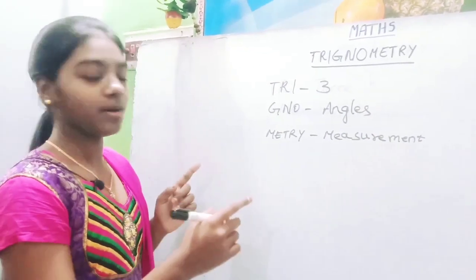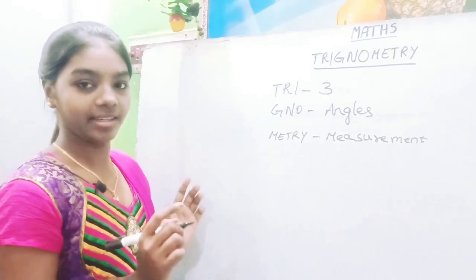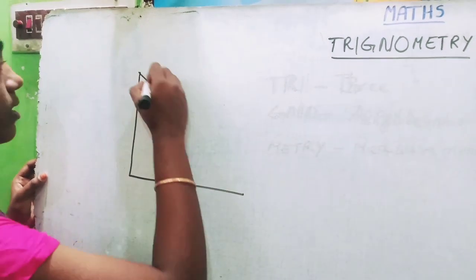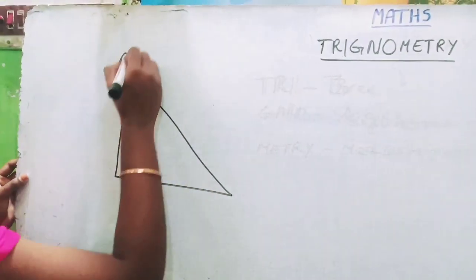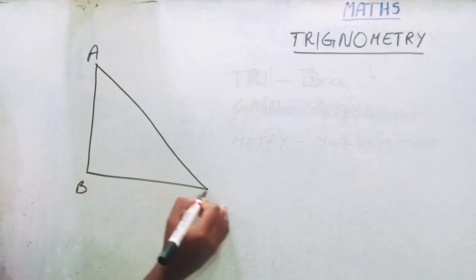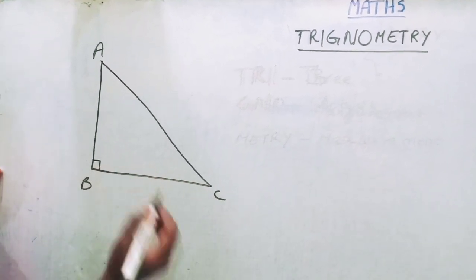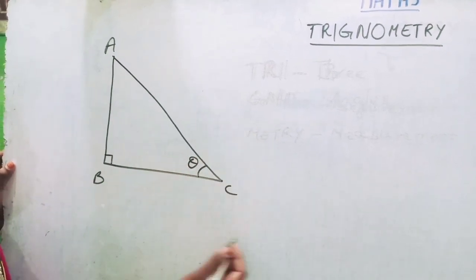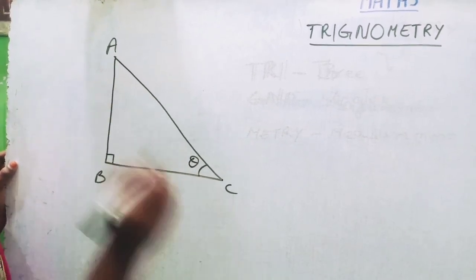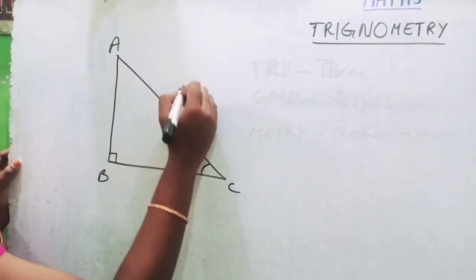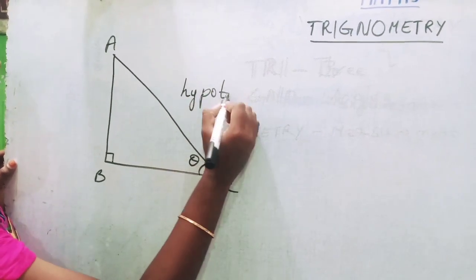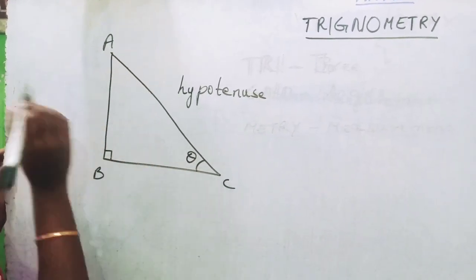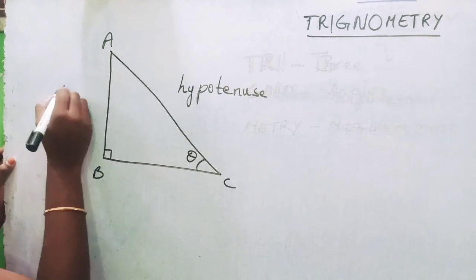The whole trigonometry chapter will be based upon the right angle triangle. Let's draw a right angle triangle and name the points as A, B and C. B is the 90 degrees angle. Let's assume that angle C is theta. Now, as AC is the longest side, we name it as hypotenuse. Side AB is exactly opposite to angle C, so we name it as opposite.